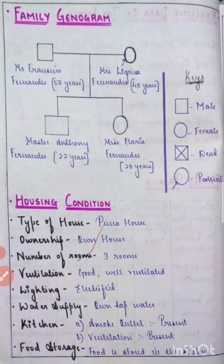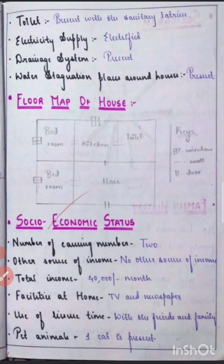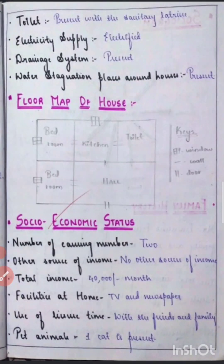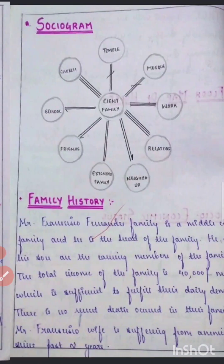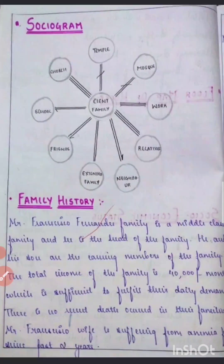Then comes the family profile, and you'll have to draw the family genogram — I have mentioned it here, you can go through it. Then you'll have to mention the housing condition, how the house is, and then draw the floor map of the house.